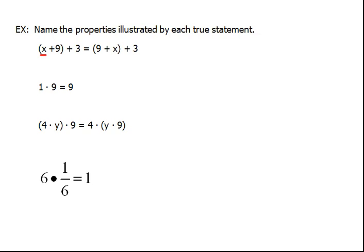Whenever we look at these, look at these x plus 9, and over here we have 9 plus x. For this, the order has changed. So, which property was it that talked about the order actually changing?